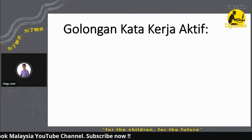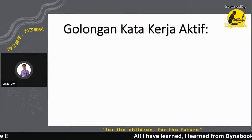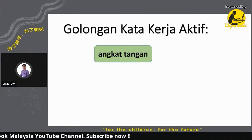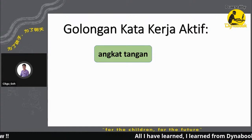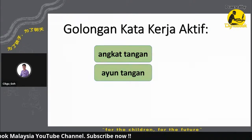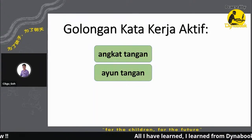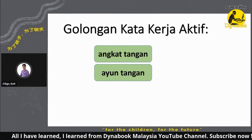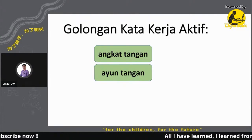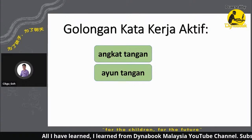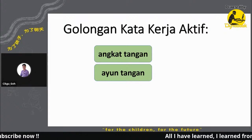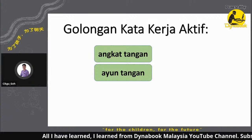Yang pertama, kita ada golongan kata kerja aktif. Apa benda itu aktif? Nanti cikgu akan terangkan. Tadi cikgu sebutkan, mula-mula kita biasa dalam kelas PJ. Cikgu suruh murid-murid angkat tangan. Kamu pun angkat tangan. Yang kedua, dia suruh kamu ayun tangan. Kalau tuan-tuan puan-puan ataupun adik-adik yang berada di depan, bolehlah ikut arahan cikgu. Jom kita buat senaman sikit. Yang pertama, kita angkat tangan dulu. Yang kedua, ayun tangan kamu.